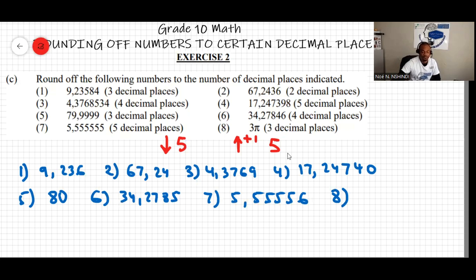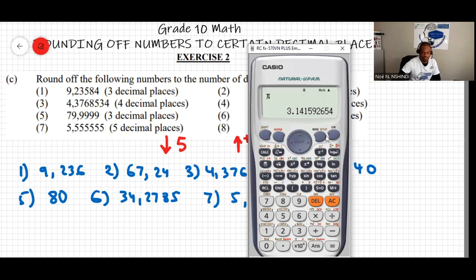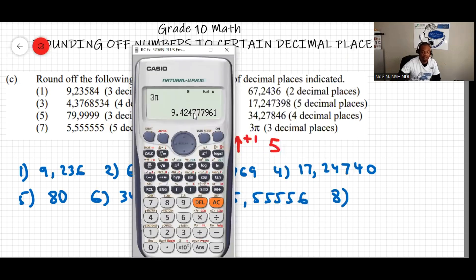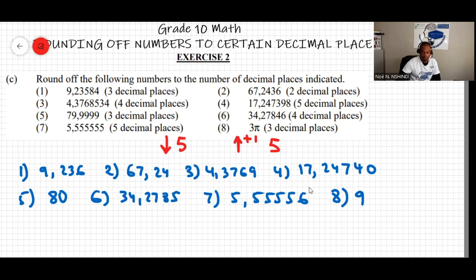Question eight: round 3 times pi to three decimal places. First, evaluate 3 times pi in the calculator by pressing shift and the pi button, then equals, then S-to-D. Count to the fourth decimal place — it's 7, which is more than 5, so increase the third decimal by one. The answer is 9.425.